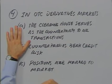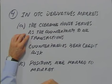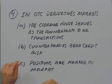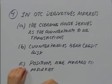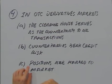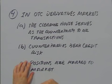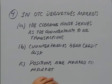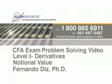Now a question regarding over-the-counter derivative markets. In over-the-counter derivative markets: A, the clearinghouse serves as the counterparty to all transactions; B, counterparties bear credit risk; or C, positions are marked to market. In OTC markets, you do not have a clearinghouse, so A is out. Positions are not marked to market, so C is incorrect. The correct answer is B: counterparties in an over-the-counter market for derivatives are the ones who bear credit risk.